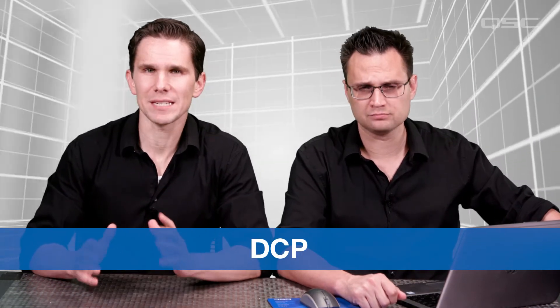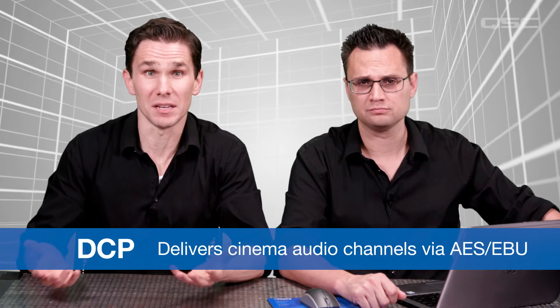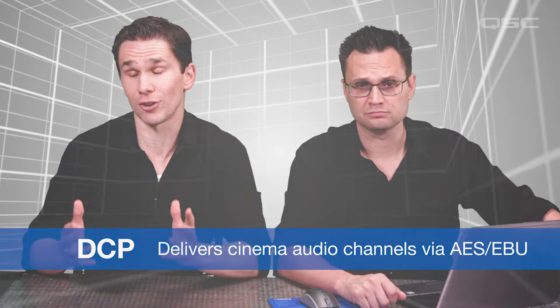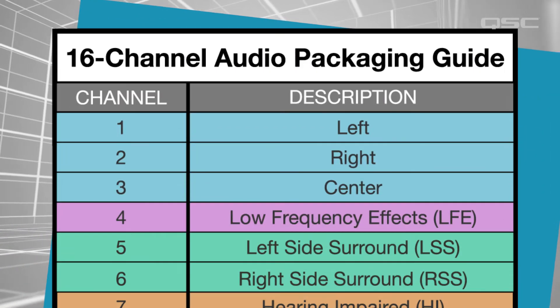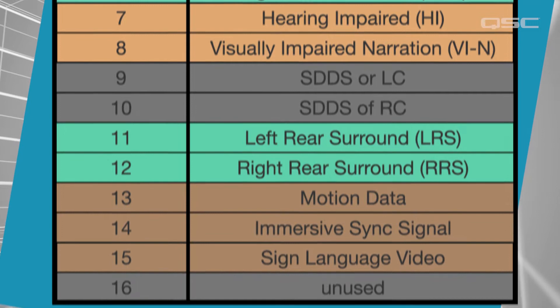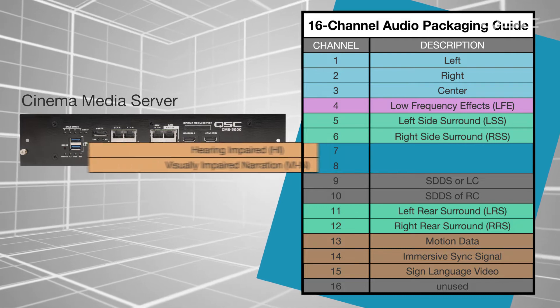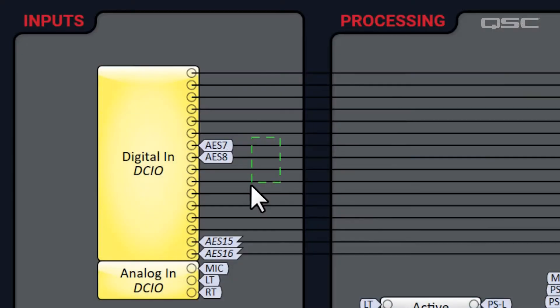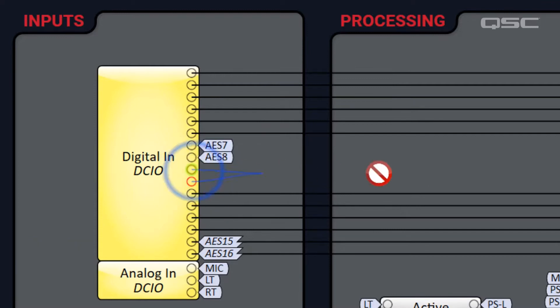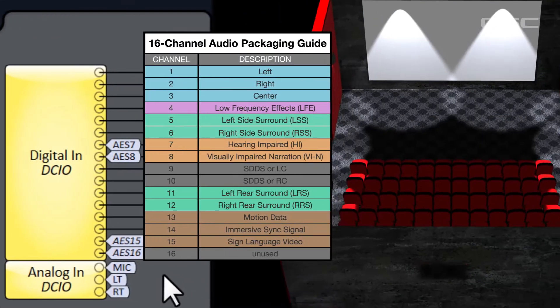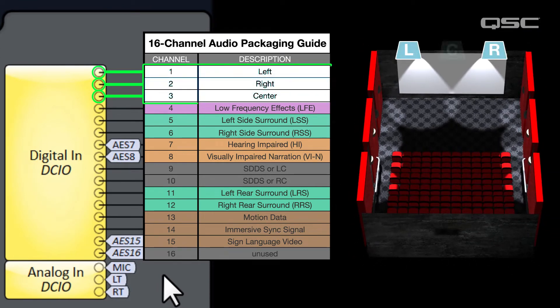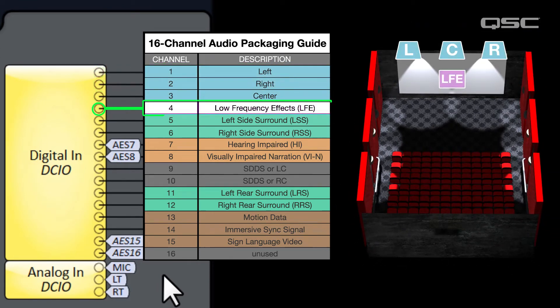AES channels 1 through 8 are still active. But if you need AES channels 9 through 16 again, you'll have to re-enable AES, which will disable your HDMI content. A standard digital cinema package, or DCP, will always deliver the same type of content on each channel via AES-EBU, based on the channel mapping of the upstream media block. By default, channels 1 through 3 are left, right, and center. Channel 4 is the LFE, or low frequency effect channel — your subwoofer.